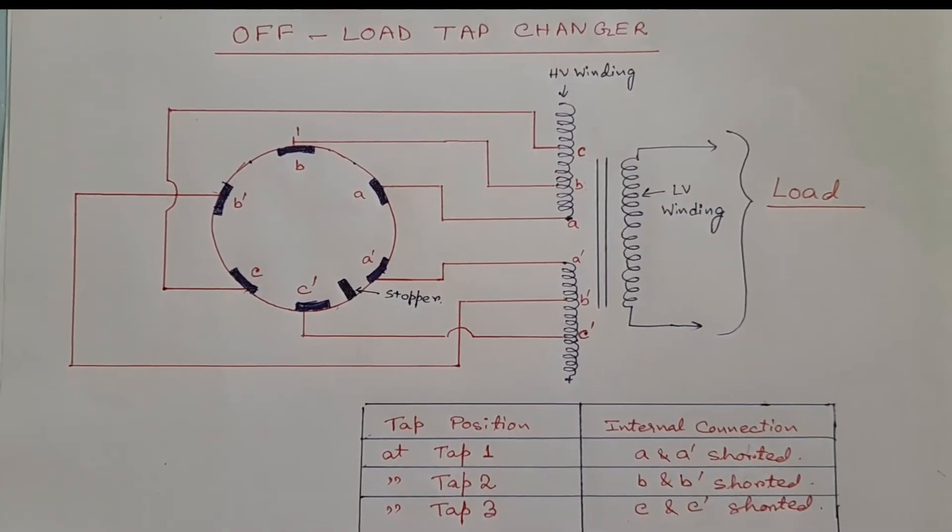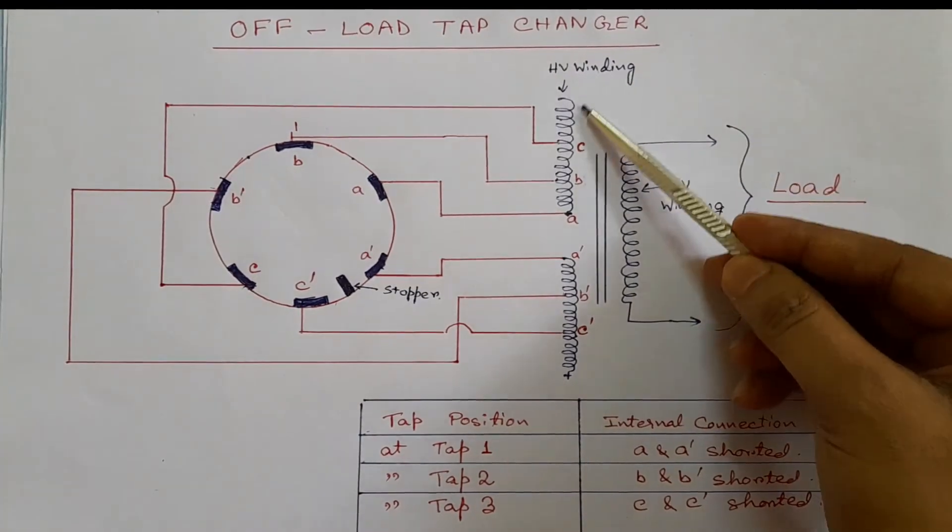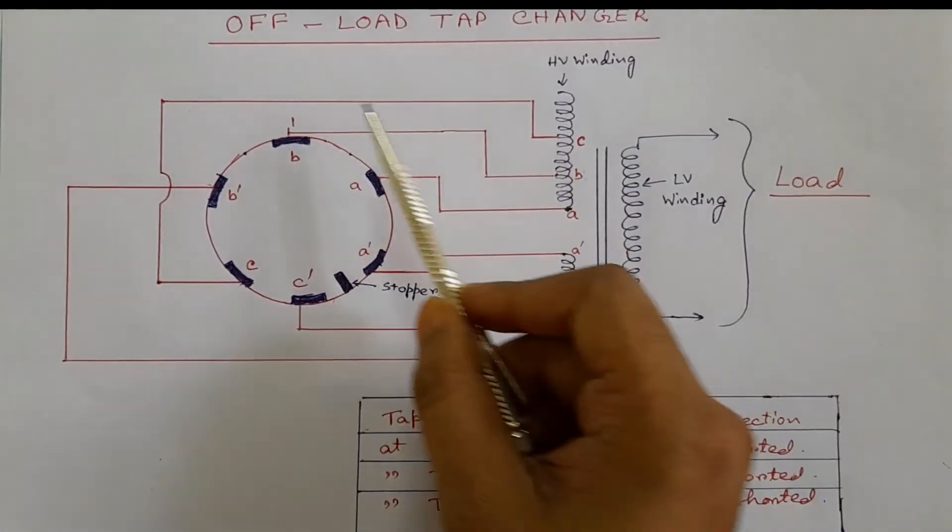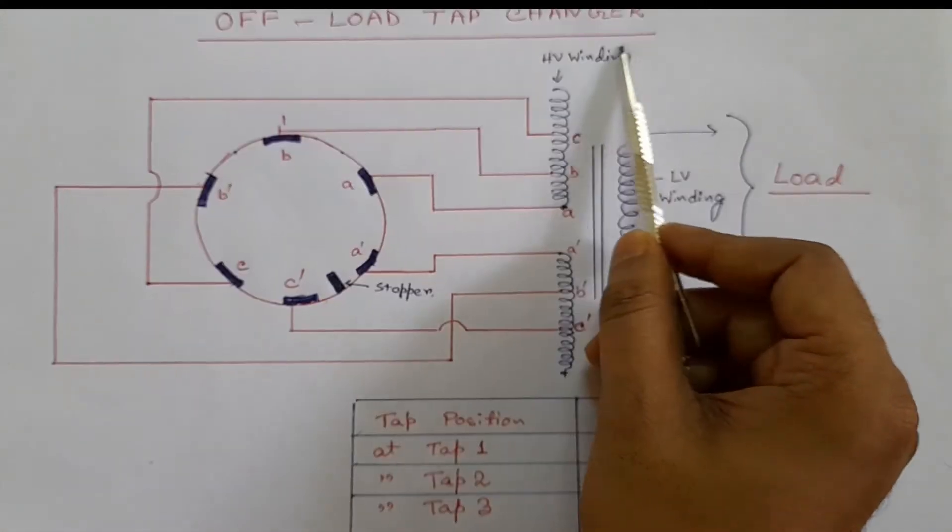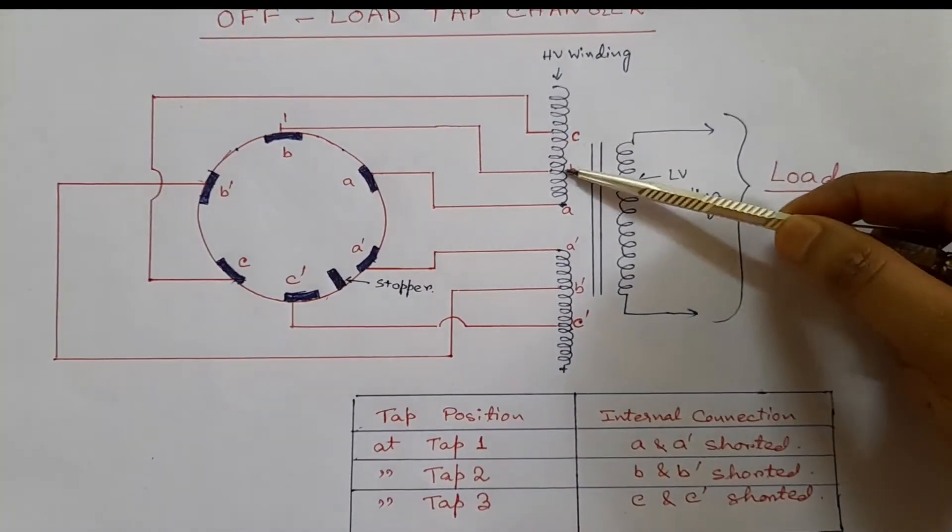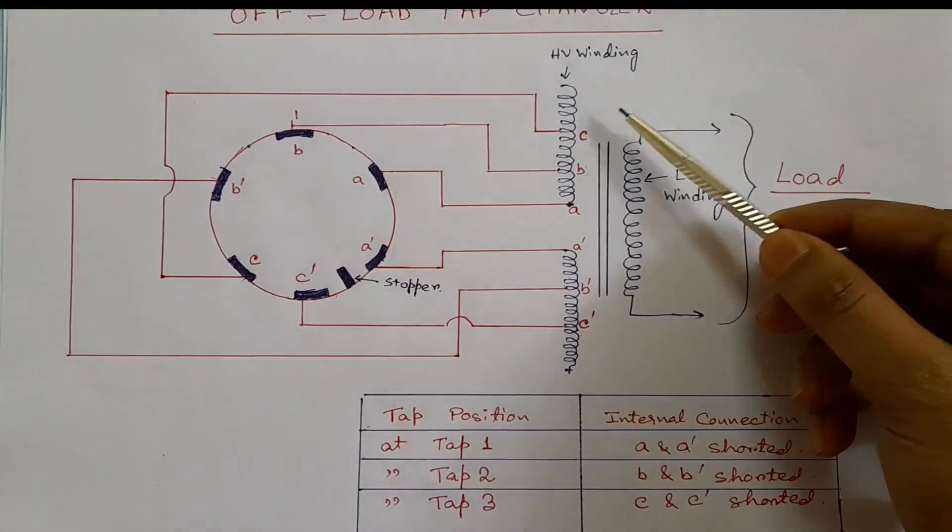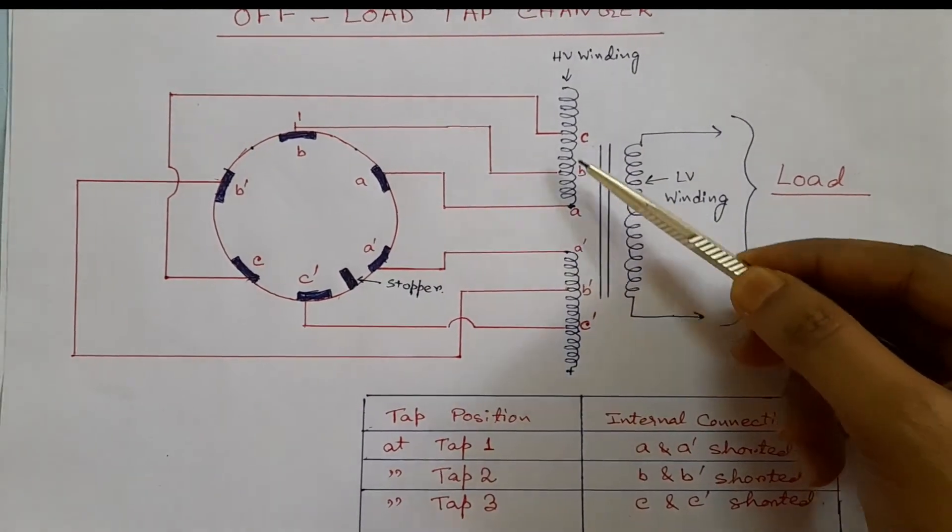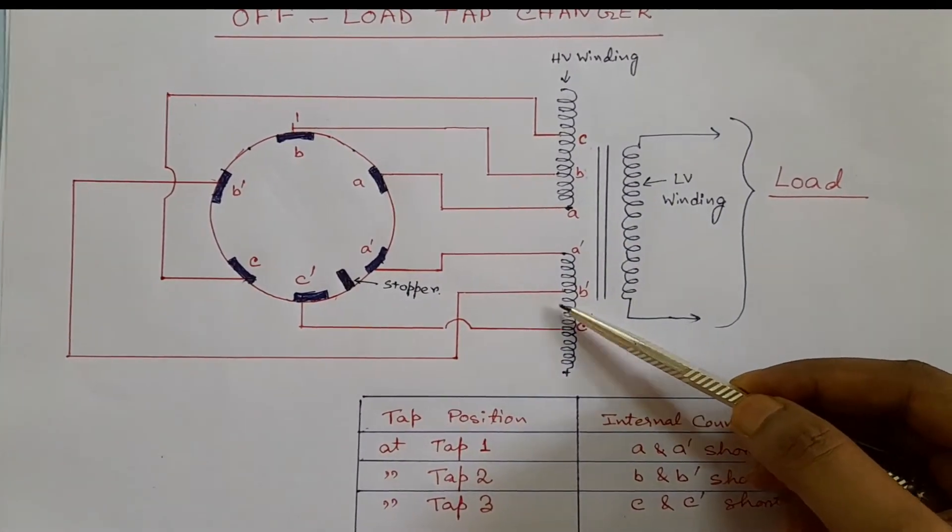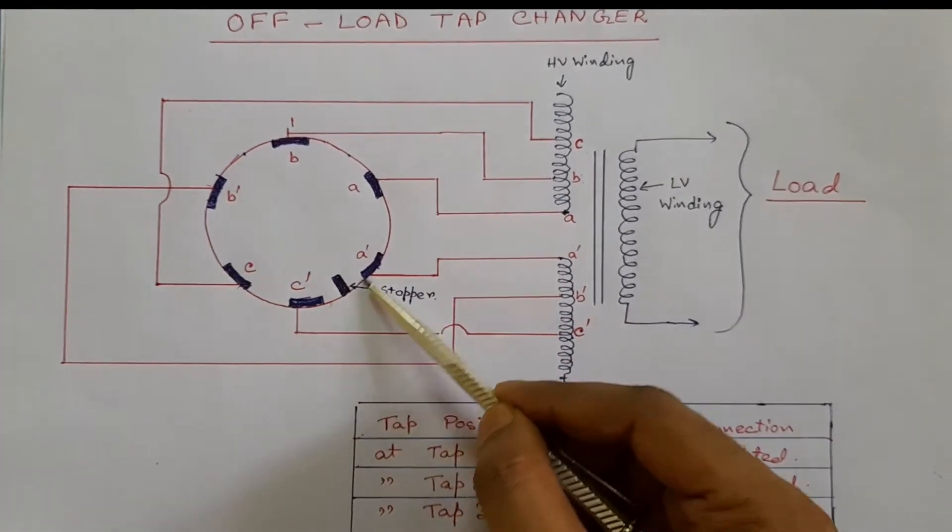We know that the tap is provided in the high voltage side of a transformer. In a transformer with an off-load tap changer, the high voltage winding is divided into two parts, and these two parts are connected in series with each other by this off-load tap changer.